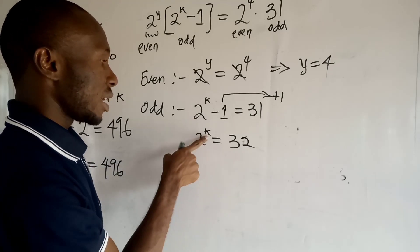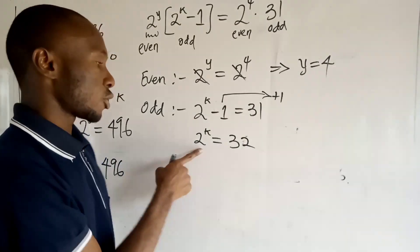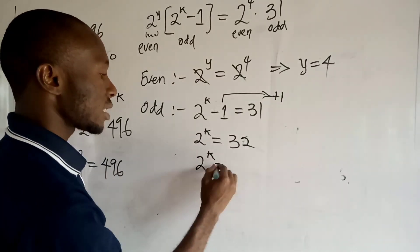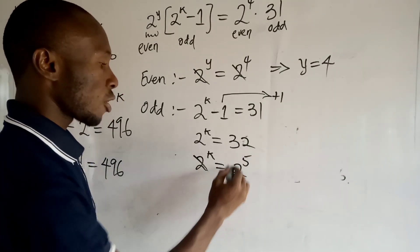So at this point you also note that k and the 32 can also be expressed in the powers of 2, so you have 2 to the power k is equal to 2 to the power 5. And it implies that k is equal to 5.